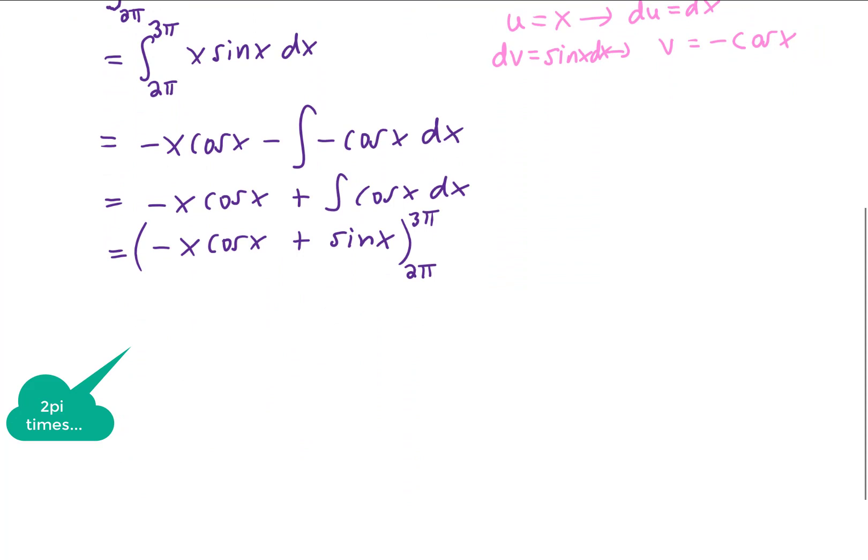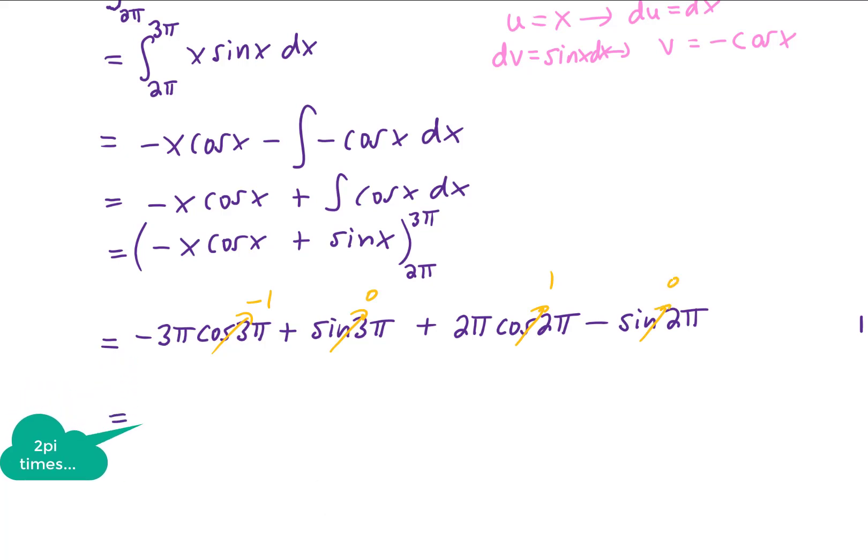So let's plug in those upper and lower limits of integration. Cosine of 3π is going to be the same thing as the cosine of π, which is negative 1. The sine of 3π is going to be 0. Cosine of 2π is going to be positive 1. And the sine of 2π is going to be 0. So what does that leave us with?